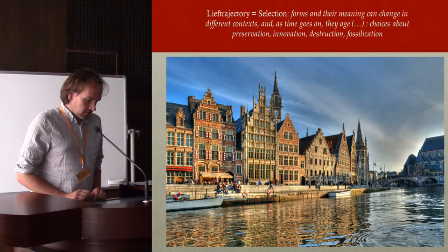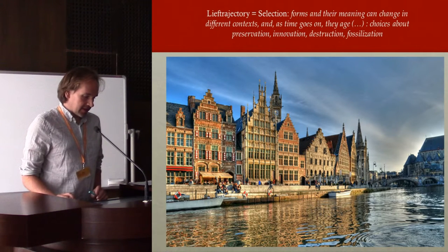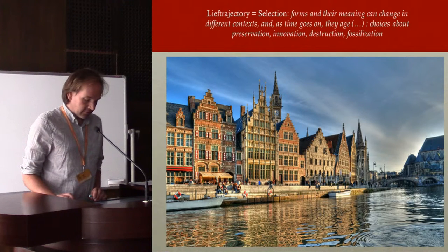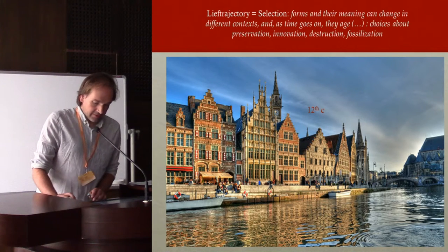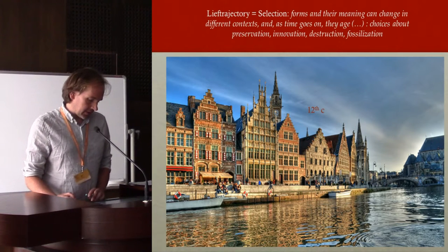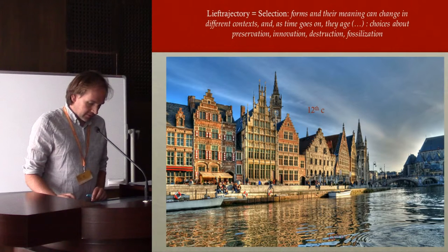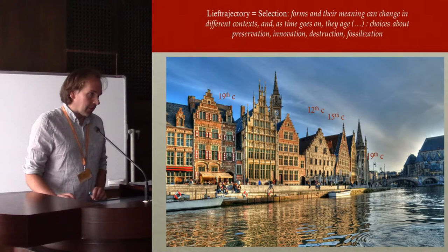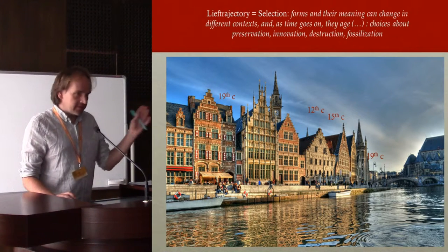The way I want to look at towns is through their life trajectories. Life trajectories mean there is always a selection — there is a form, and a form can change in different contexts. As time goes on, the form can age, disappear, be preserved, innovated, or restored. If you look at this view of Ghent — the largest medieval town north of the Alps in the late medieval period — only one building is 12th century. This is a 15th century building, this is a 19th century building, and even the bridge is 19th century. So this is an amalgam of many different strategies and phenomena.